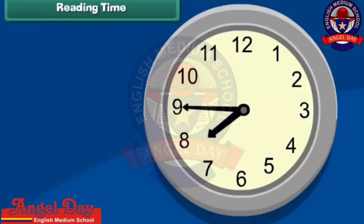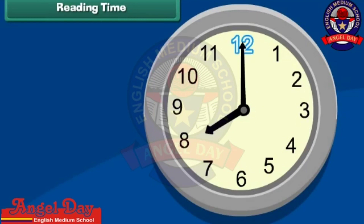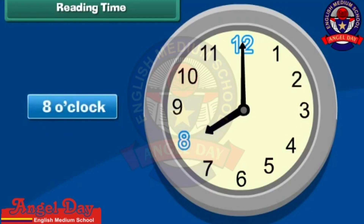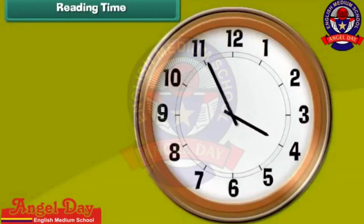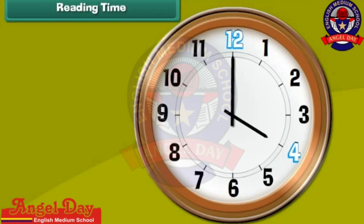Look at this clock. Note the positions of the minute and hour hands on its face. The minute hand is pointing to 12 and the hour hand is pointing to 8, which means the time is 8 o'clock. Look at another clock. Its minute hand is pointing to 12 and the hour hand is pointing to 4, which means the time is 4 o'clock.